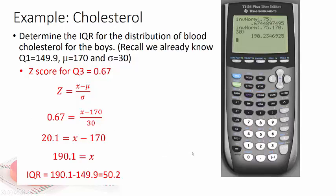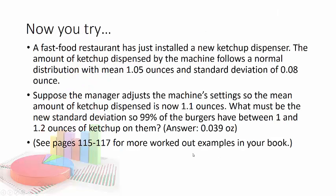But you need to show us that you know what you're doing. So what I'd like you to try now is there's a fast food restaurant has just installed the ketchup dispenser. The amount of ketchup dispensed by the machine follows a normal distribution with a mean of 1.05 ounces and a standard deviation of .08 ounces. Now suppose the manager adjusts the machine settings so the mean amount of ketchup is now 1.1 ounces. What does a new standard deviation have to be? Now this one's a little different because you're basically, you're not solving for x on this one. You're solving for the denominator. So it's a little bit of a challenge if you struggle with it. That's okay. We'll go over it in class. And go ahead and look at pages 115 to 117 in your book. They have some other great examples that are worked out. And if you have any questions, we'll answer.